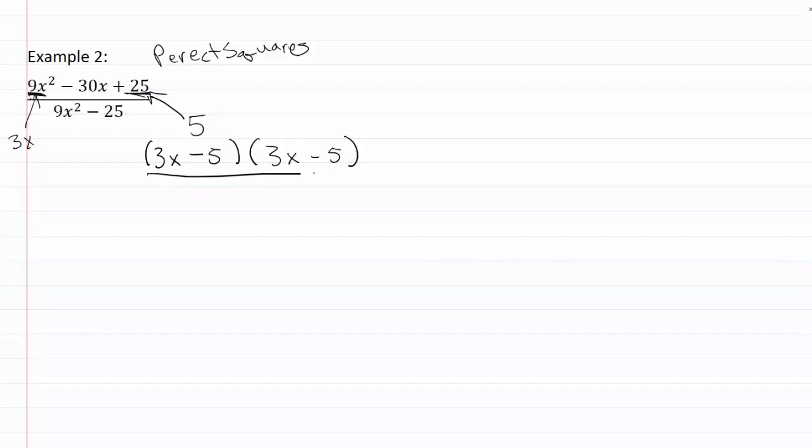And then on the bottom I've also got a perfect square in my first term, perfect square in my last term, but here I've only got two terms, and I've got this minus sign in the middle. So this is going to be a difference of squares. So for my difference of squares I want to take the square root, which turns out is exactly the same thing as it was before, very convenient. So now I'll have 3x plus 5 and 3x minus 5.